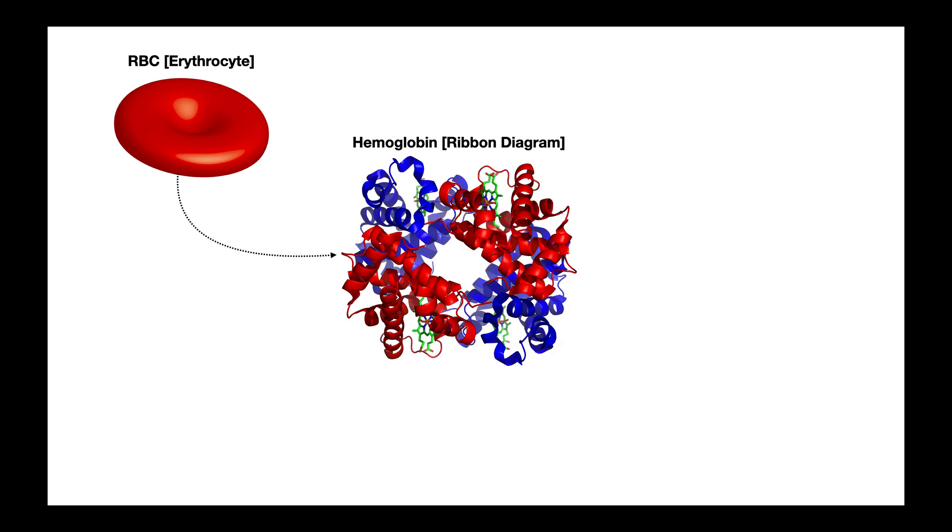So first of all, right here we have a red blood cell or an erythrocyte, biconcave disc. If we zoom in on the red blood cell, we know that it contains lots and lots of hemoglobin. Here's a ribbon diagram of the protein hemoglobin, and you can see the four hemes there that bind oxygen.